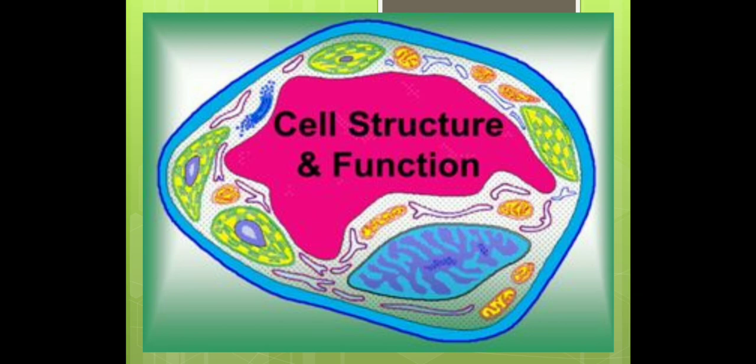We will start with chapter number eight, that is the cell: structural and functional unit. You have already learned and studied about living and non-living in the previous classes, along with a bit about cell — what is a cell, how it functions, etc. On the basis of their functions, an organism can carry out its life processes; different sets of organs perform various functions. In this chapter, you shall learn about the basic structural unit of an organ, which is the cell.